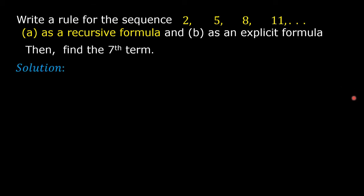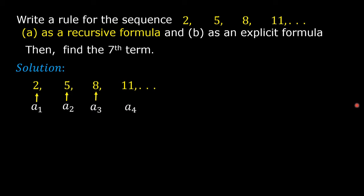Solution. The sequence is 2, 5, 8, and 11, and so on. Represent the first term by a sub 1, the second term by a sub 2, the third term by a sub 3, and the fourth term by a sub 4. 2 is the first term, and it is represented by a sub 1.